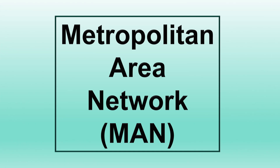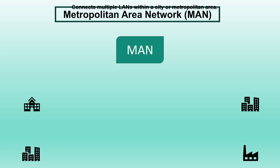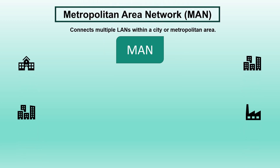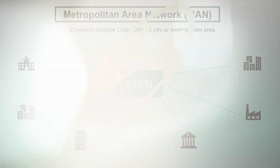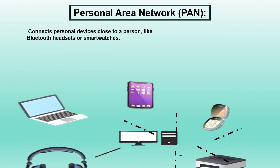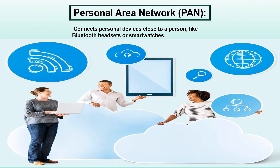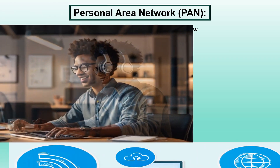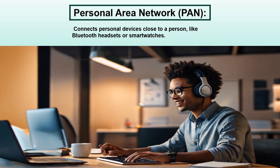A metropolitan area network, MAN, is a computer network that covers a geographic area larger than a LAN but smaller than a WAN. A PAN is like a mini network for your personal devices, allowing them to connect and share information within a short range, usually a few meters. Examples include connecting your phone to a headset or a smartwatch.